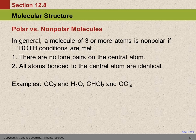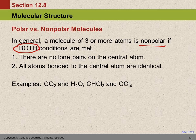So generally, if you have a molecule that has more than two atoms, it will be non-polar if both of these conditions are met. You look at the Lewis structure: if there are no lone pairs on the central atom, and if all the atoms bonded to the central atom are the same, then it's a non-polar molecule. If either of those things is not true, then it's a polar molecule. We do need a quick way of determining whether something is polar or not polar for some stuff we'll be doing in the future.